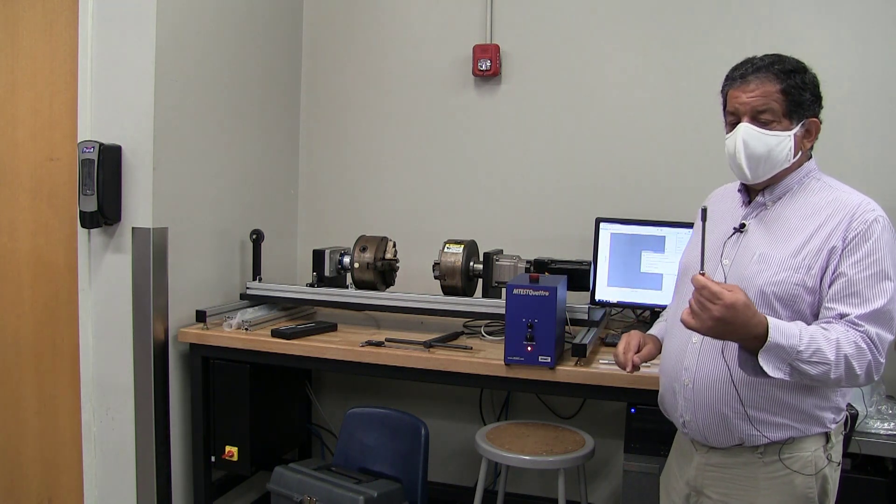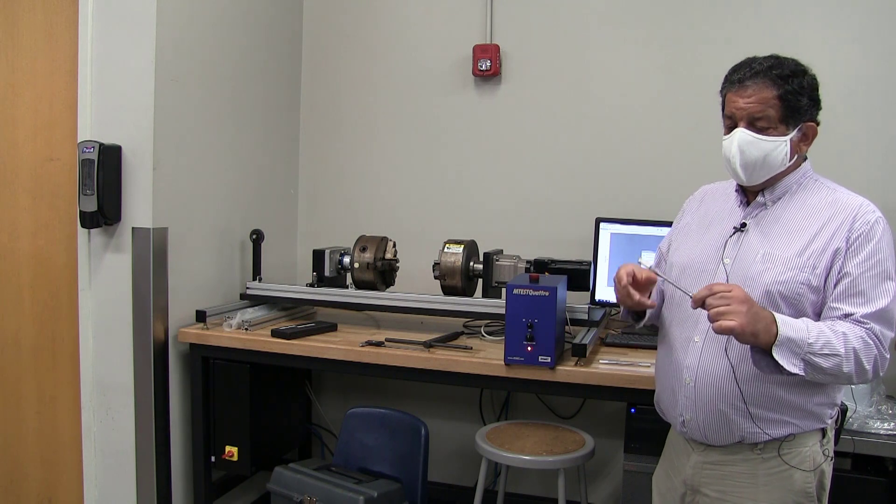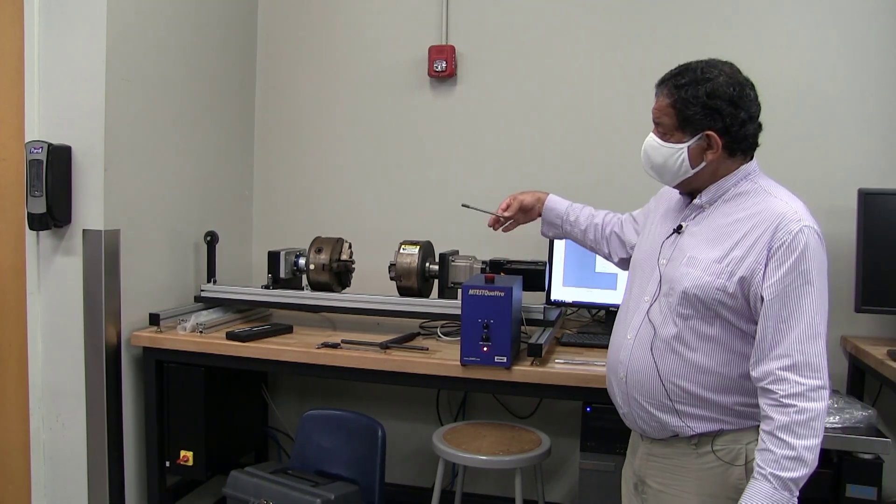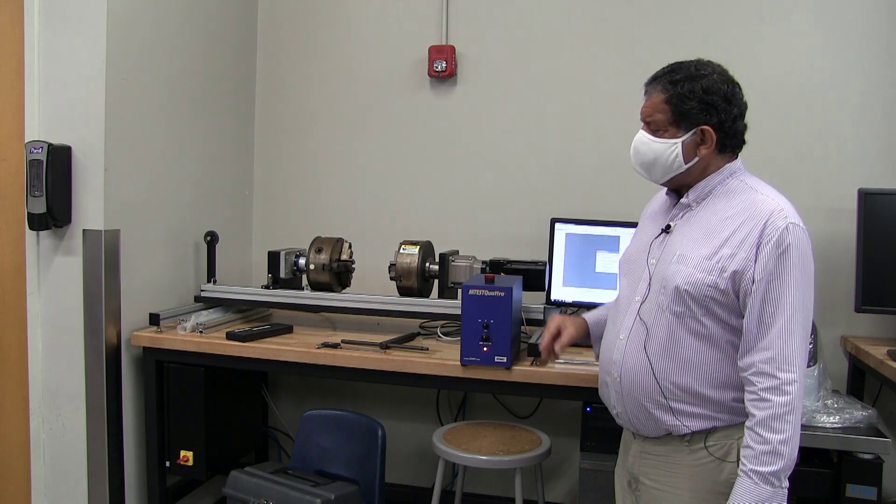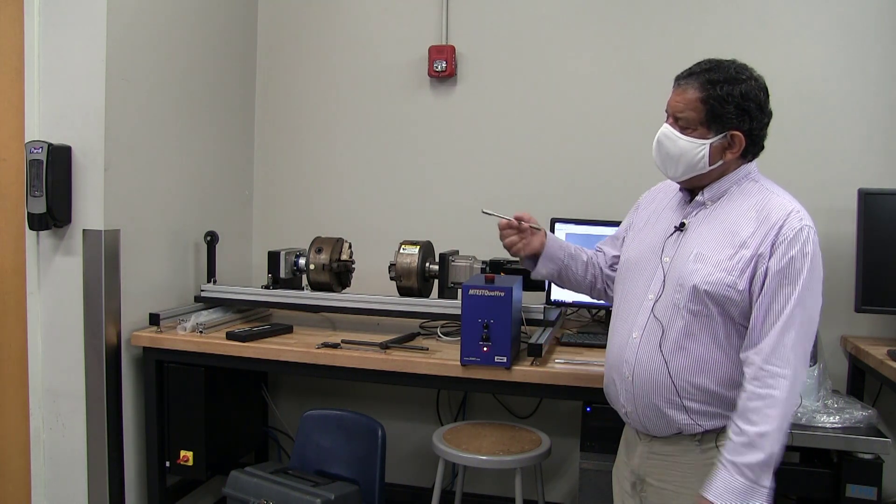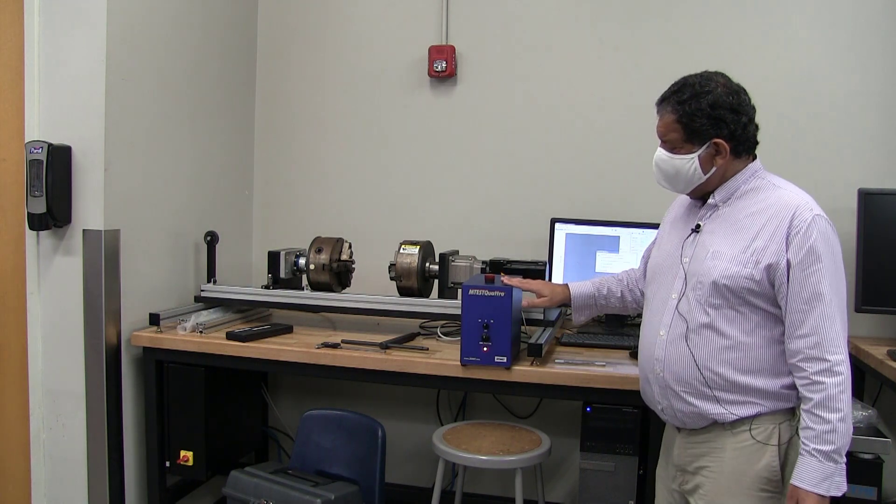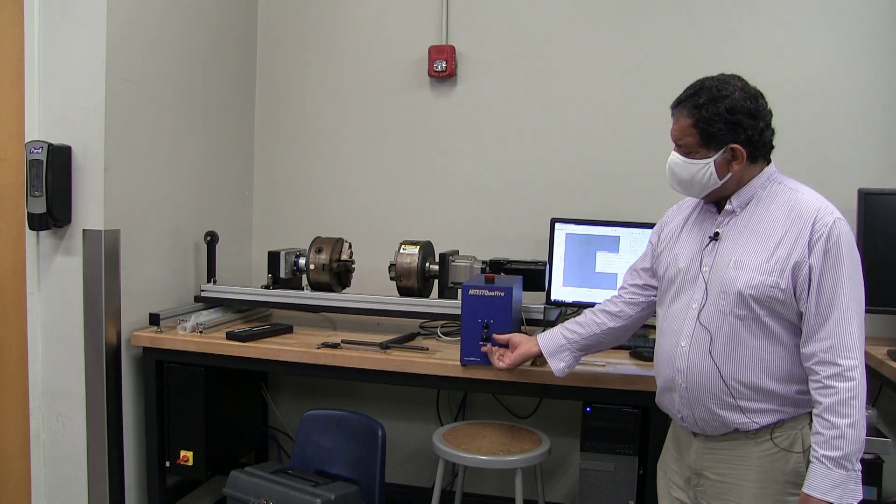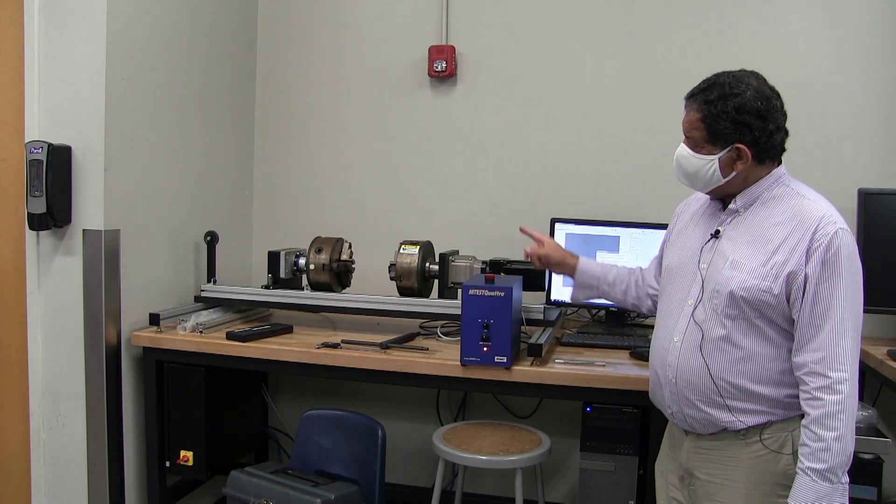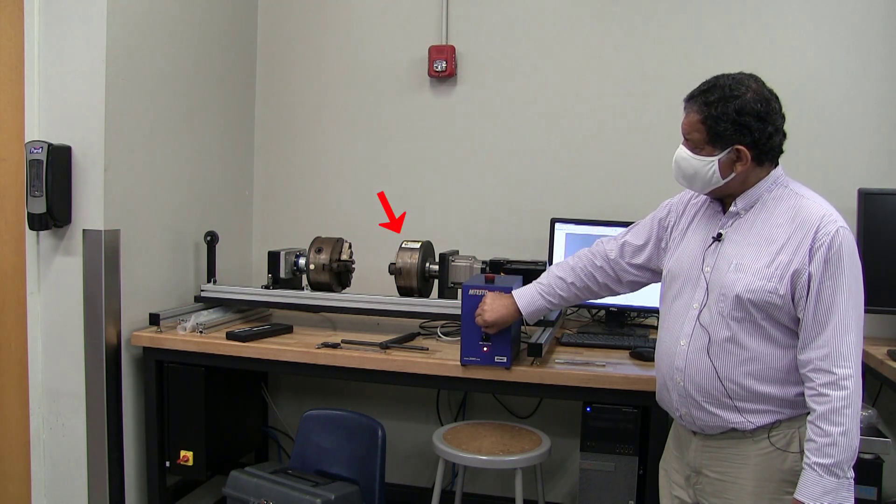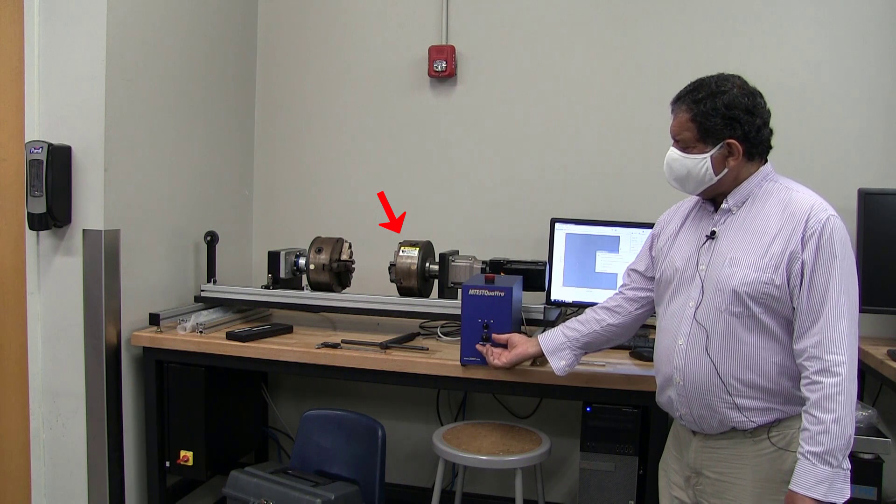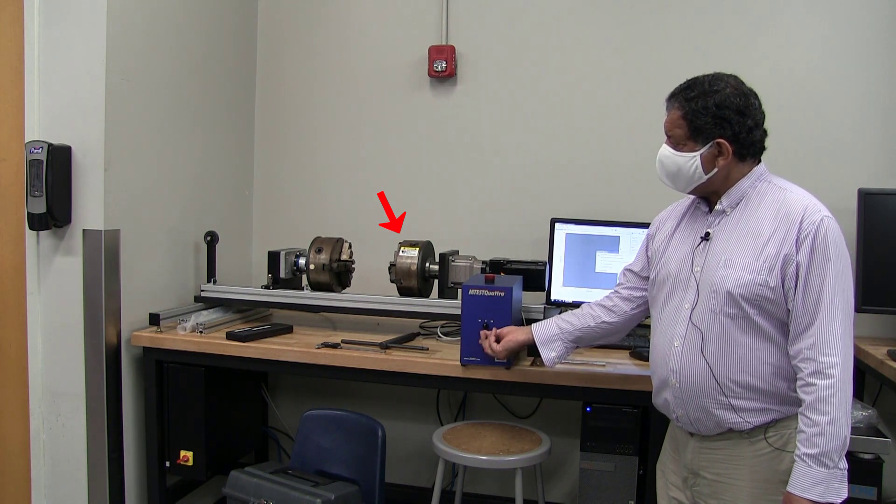During the course of the experiment, what we're going to do is we're going to take these specimens and mount them in this machine, which has two lathe chucks, three jaw chucks in them. This is the controller, which you can use to jog the position of the chucks. This is a coarse jog, which rotates it pretty fast. This is a fine jog, which rotates it a little bit.